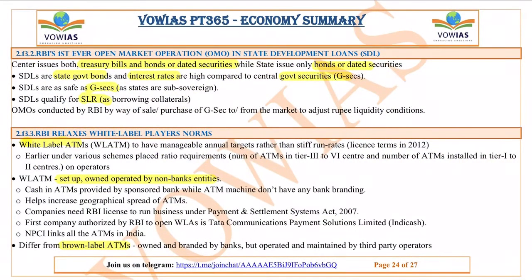RBI conducted its first-ever Open Market Operation (OMO) in State Development Loans. State Development Loans are bonds issued by state governments. Previously, RBI used OMO only for central government securities. The central government issues T-bills — short-term instruments of 91, 182, and 364 days — which cannot be issued by state governments. All other bonds issued by state governments are called State Development Loans, and RBI recently purchased them through OMO.